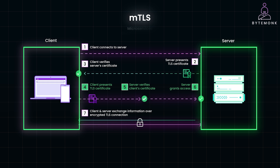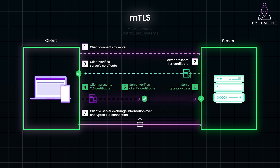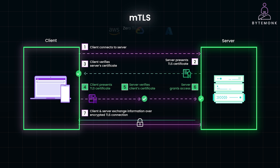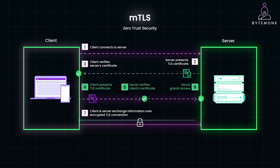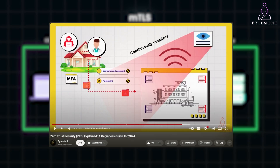With the rise of microservices and distributed systems, MTLS became more widely adopted, particularly in cloud-native environments like AWS, GCP, and Azure. It also fits perfectly into zero-trust security models, where no implicit trust is assumed even for internal network communication. If you're interested in learning more about zero-trust security, check out my video covering its key principles.